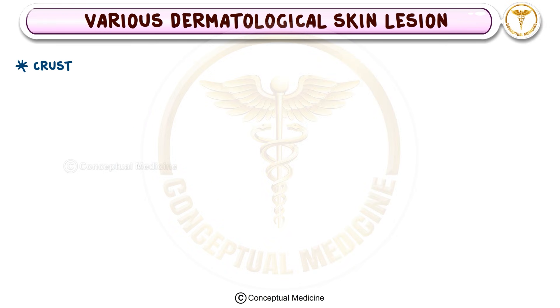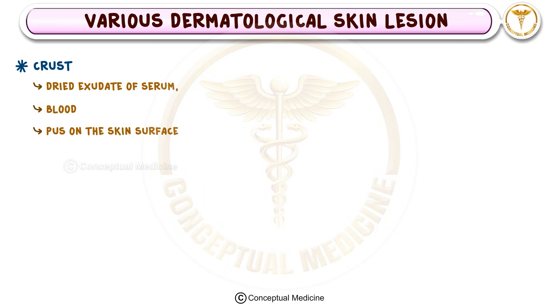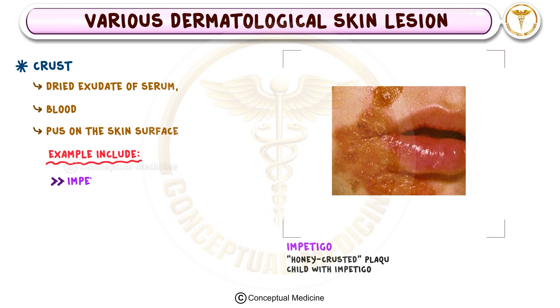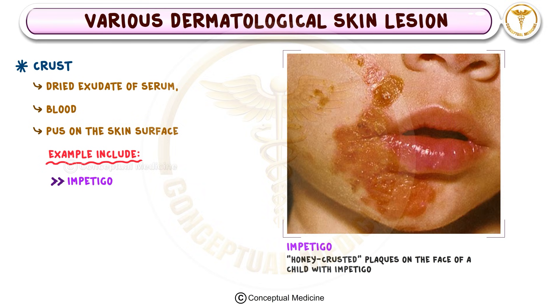The crust is another important lesion, formed by the drying of serum, blood, or pus on the skin surface. Crusts are commonly seen in impetigo, a superficial bacterial infection characterized by honey-colored crusts.